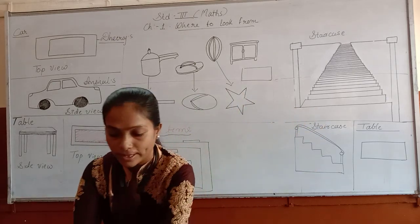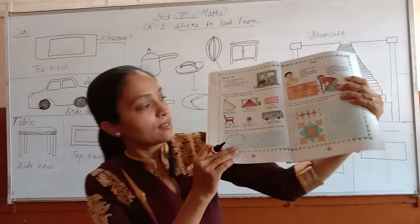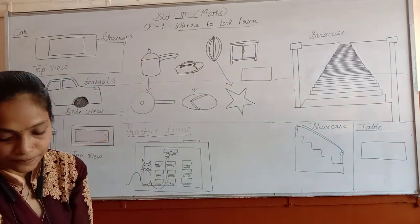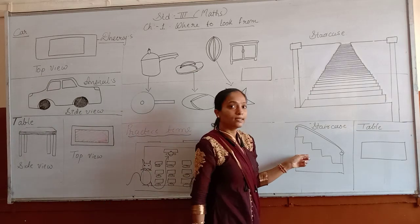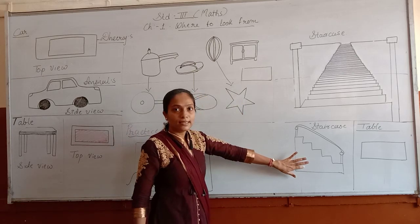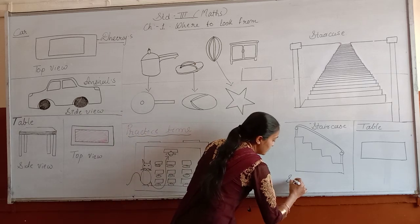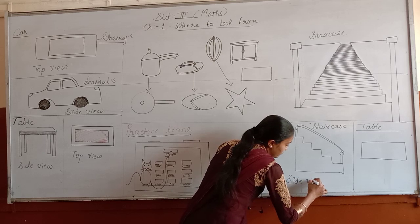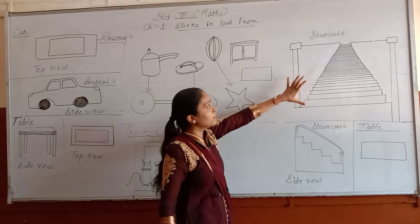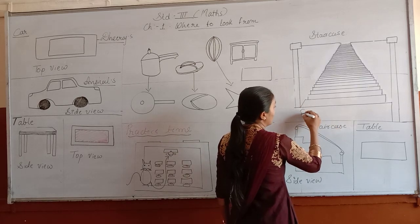A few pictures are given in your textbook and there is an empty space where we have to write the answer. You have to write the different views. First one is given: staircase. Which view is this? This is the side view of a staircase. So here we will write the answer: side view. Next is also a staircase but the view is different — this is the front view of a staircase. Which view is this? Front view. Then in the space you have to write the answer in the textbook.